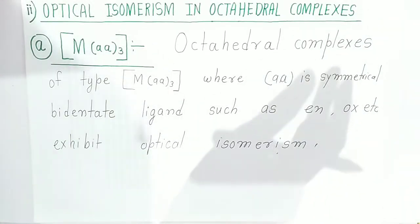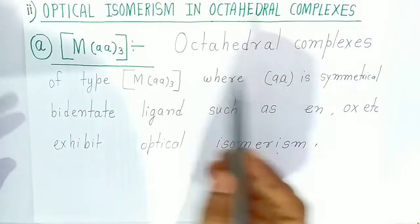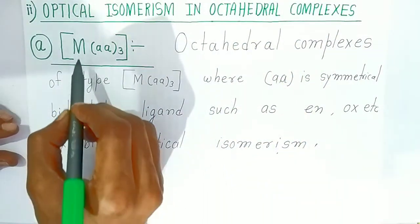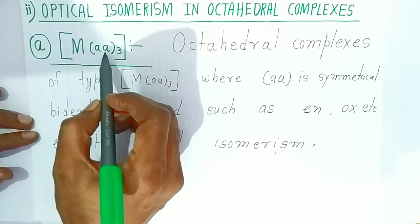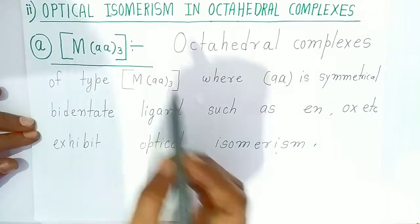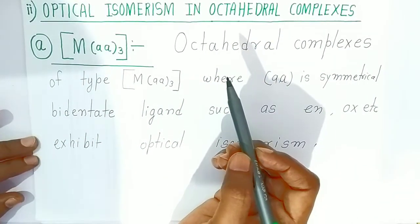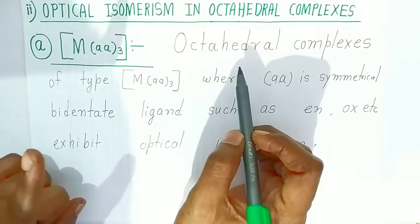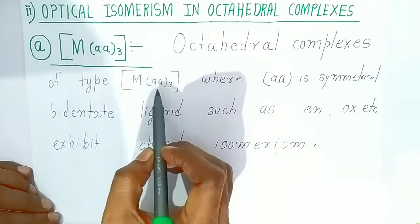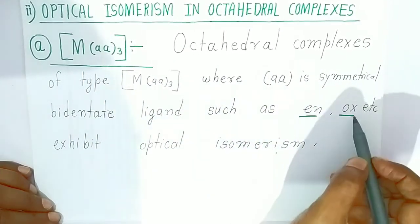Welcome to Bholanart Academy. Today we are going to see optical isomers in octahedral complexes. Here, capital M is the central metal atom and AA is the ligand, present three times, meaning AA is a bidentate ligand. In an octahedral complex, one metal is surrounded by six donor atoms. Complexes of the type M(AA)₃, where AA is a symmetrical bidentate ligand such as en or oxalate, exhibit optical isomers.